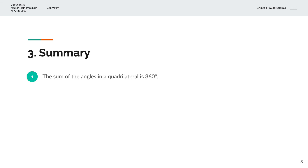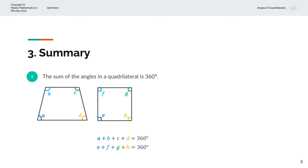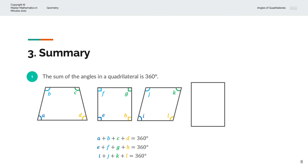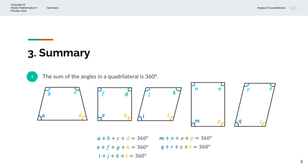To summarize, the sum of the angles in a quadrilateral is 360 degrees. For a trapezium with angles ABCD, that sums to 360 degrees. For a square with angles EFGH, that sums to 360 degrees. For a rhombus with angles IJKL, that sums to 360 degrees. For a rectangle with angles M, O, P, that sums to 360 degrees. And for a parallelogram with angles QRST, that sums to 360 degrees. Thank you very much for watching. This is Master Mathematics in Minutes.